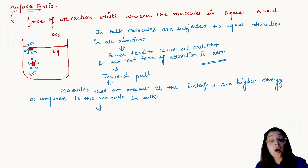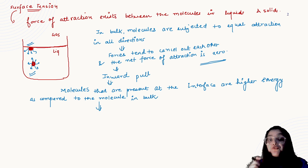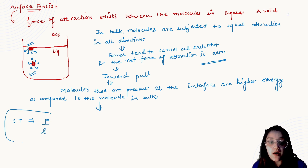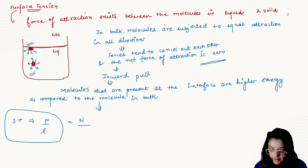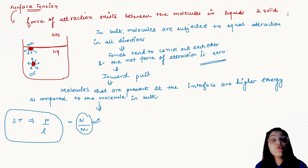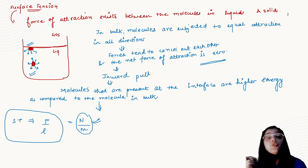Surface tension is nothing but force per unit length. The unit of force is Newton and the unit of length is meter, so Newton per meter is the unit of surface tension. Surface tension is the force required to counterbalance the inward force experienced by the molecules present at the interface. Importantly, surface tension actually indicates the strength of cohesive forces.